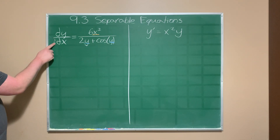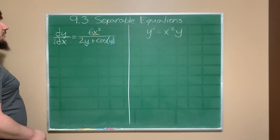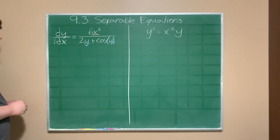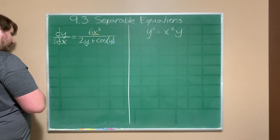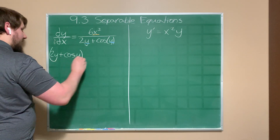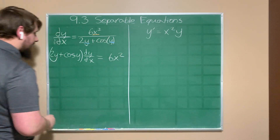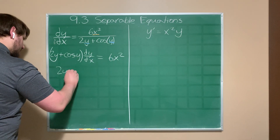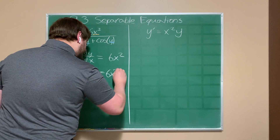The dx on the left side can be multiplied to the right side, giving us all the y's on the left with dy and all the x's on the right with dx. Multiplying by the denominator and then by dx, we get: 2y + cos(y) dy = 6x² dx.